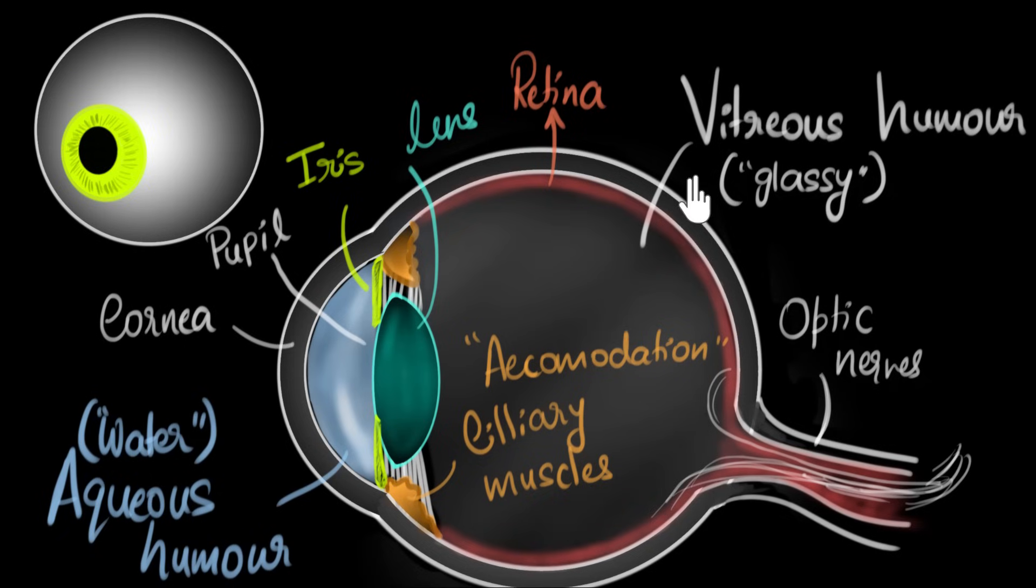The jelly-like substance, the vitreous humor, maintains the shape of our eyeball. The iris regulates the size of the pupil, which in turn regulates the amount of light that enters our eyes. And finally, the ciliary muscles regulate the power, optical power of our eyes, depending upon the viewing distance.